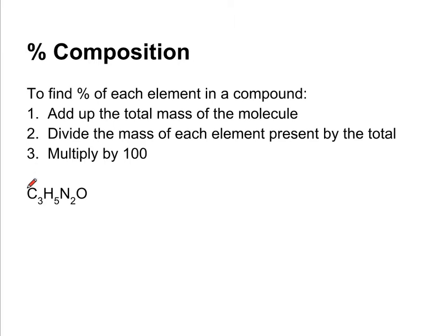So in this molecule right here, remember that each carbon atom has a mass of 12 amu, hydrogen is 1, nitrogen is 14, and oxygen is 16. So our total mass would be 12 times 3,